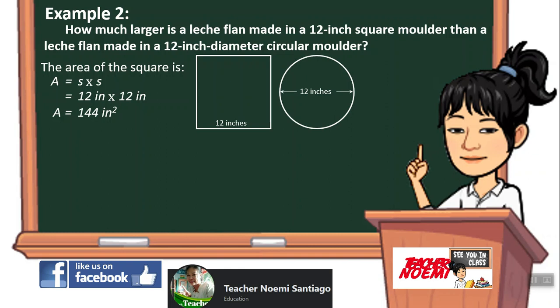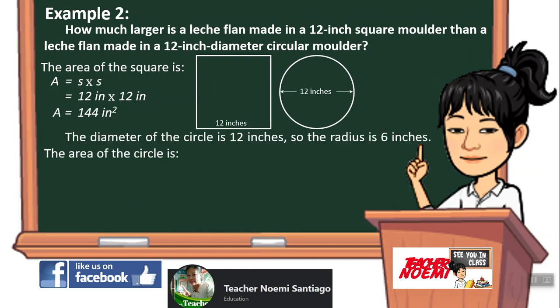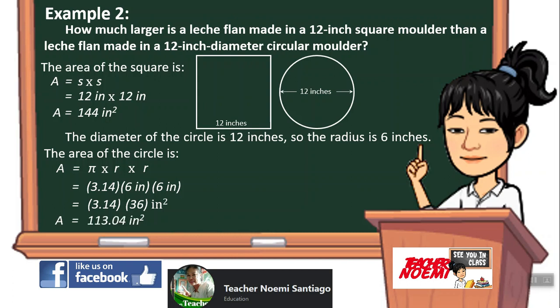Next, the diameter of the circle is 12 inches, so the radius is 6 inches. Always remember that the radius is half of the diameter. The area of the circle is A equals pi times R squared: 3.14 times 6 inches times 6 inches equals 3.14 times 36 square inches. The area equals 113.04 square inches.